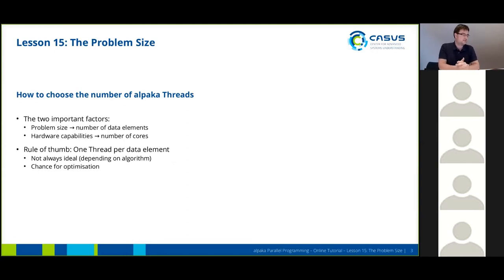The two important factors here are the problem size, the number of data elements, and your hardware capabilities, mostly your number of cores. If you don't know how exactly you want to distribute your data, it's a good rule of thumb to launch one thread per data element. This is not always the ideal choice. It depends on your algorithm and your problem and your workload. But if you start with it, this is also a good chance for optimization later.